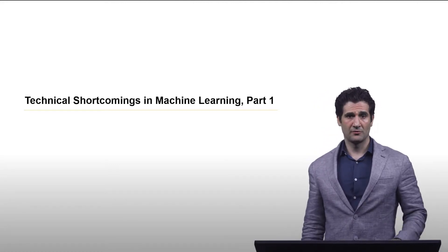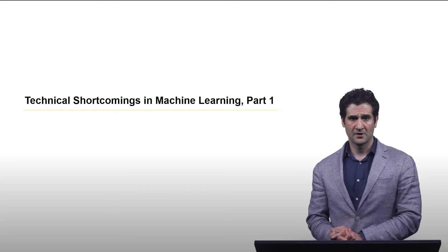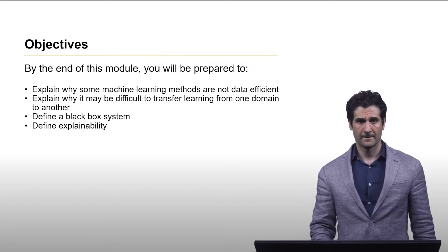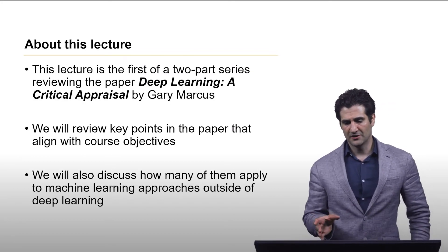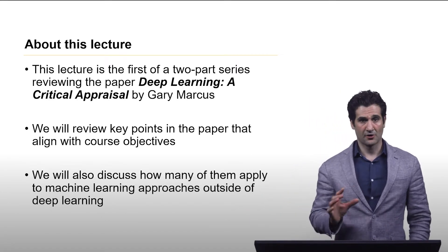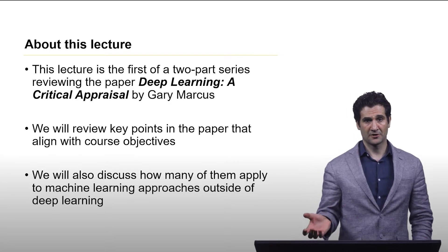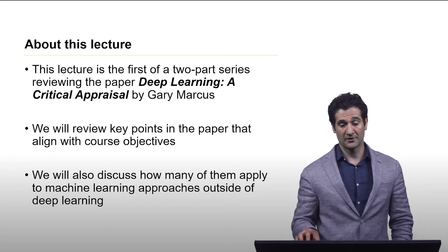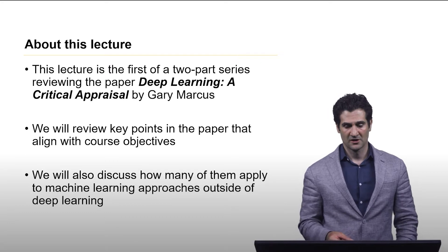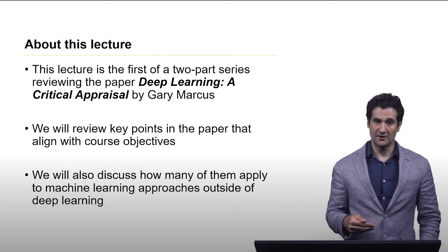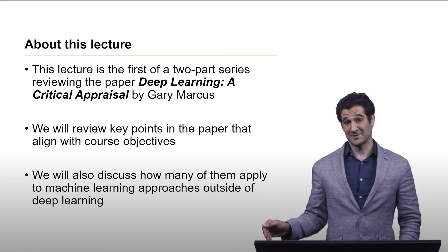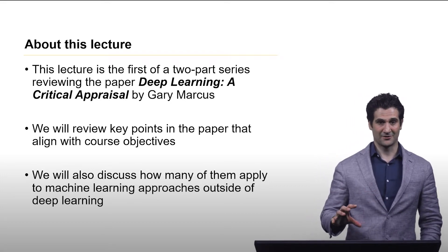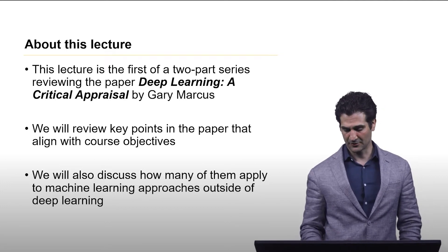Welcome back. In this lecture we will go over our first part of technical shortcomings in machine learning. Here are the associated objectives. In this lecture and the one following it, we're going to be going over points brought up in the paper Deep Learning: A Critical Appraisal by Gary Marcus. We're going to review some of the key points that he brought up that closely align with lesson objectives, and we're also going to talk about how many of these points are not really deep learning specific, and they actually apply to a wide variety of machine learning techniques, which is why we titled this lecture as being about machine learning in general, not deep learning specifically.